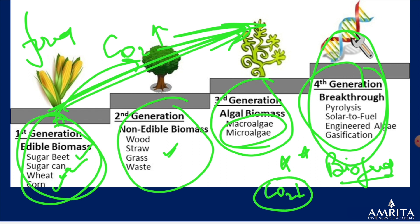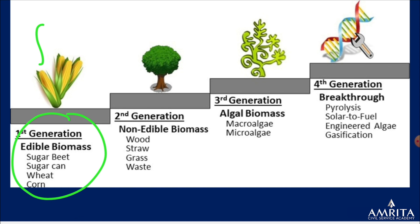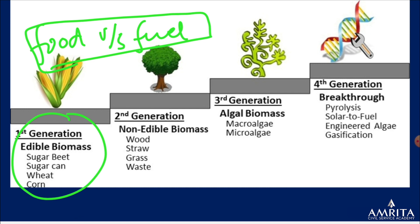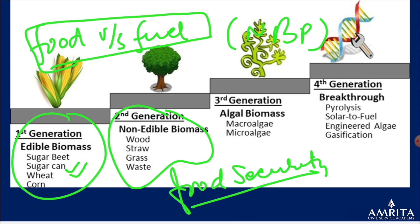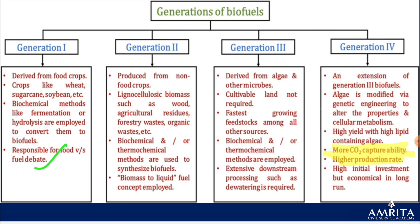Fourth generation biofuel would not only reduce CO2 production but also remove CO2 already in the atmosphere. The first generation raised the food versus fuel debate — this debate also appeared in the National Biofuel Policy, which allows edible biomass to be converted to biofuel if permission is granted by a committee. Activists argue this hampers food security. The importance of second and subsequent generation biomass is that fuel generation should not come at the cost of food security.